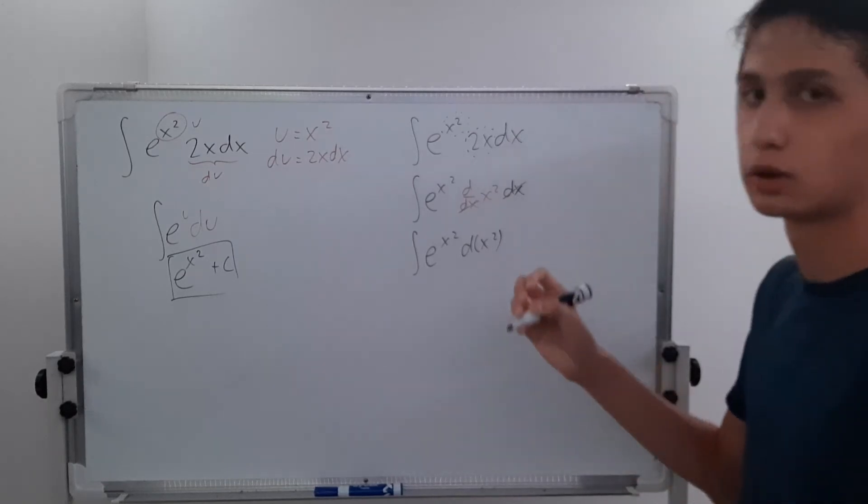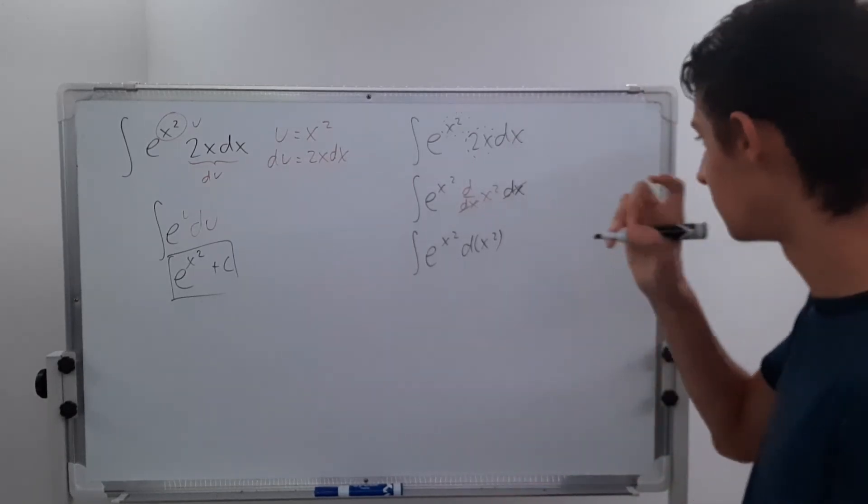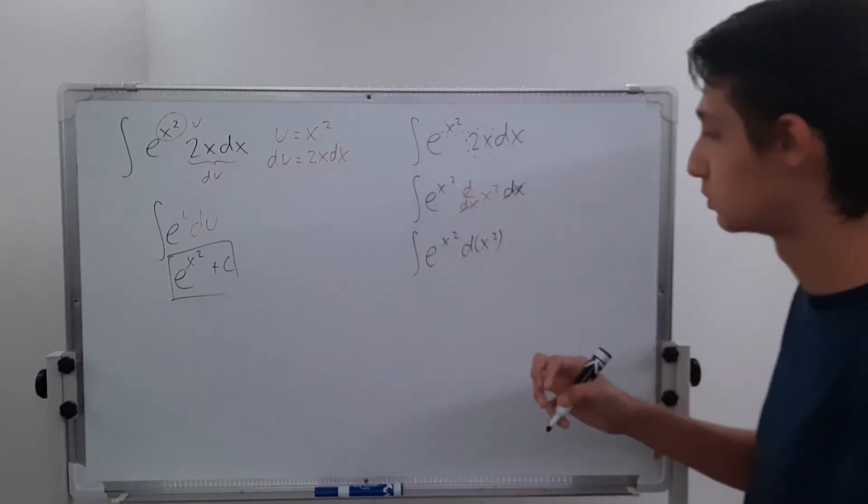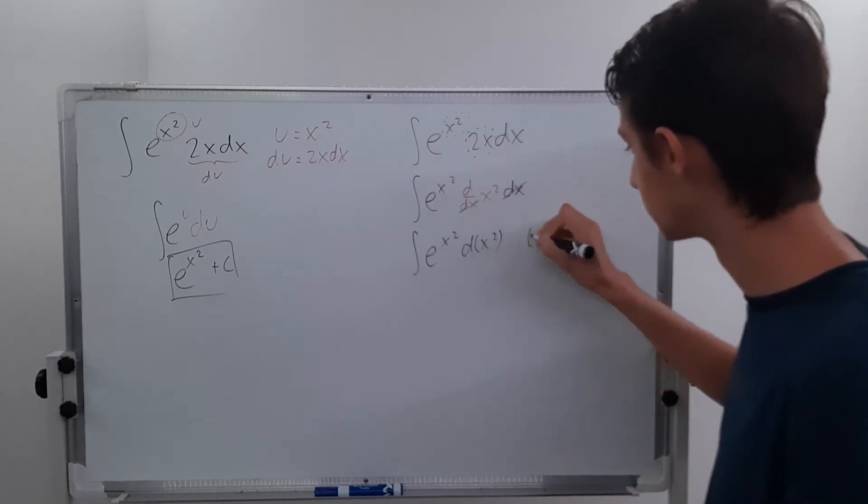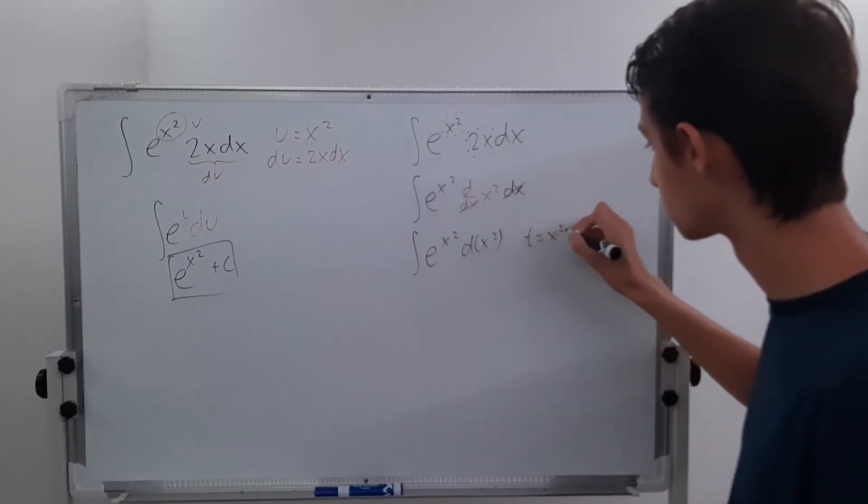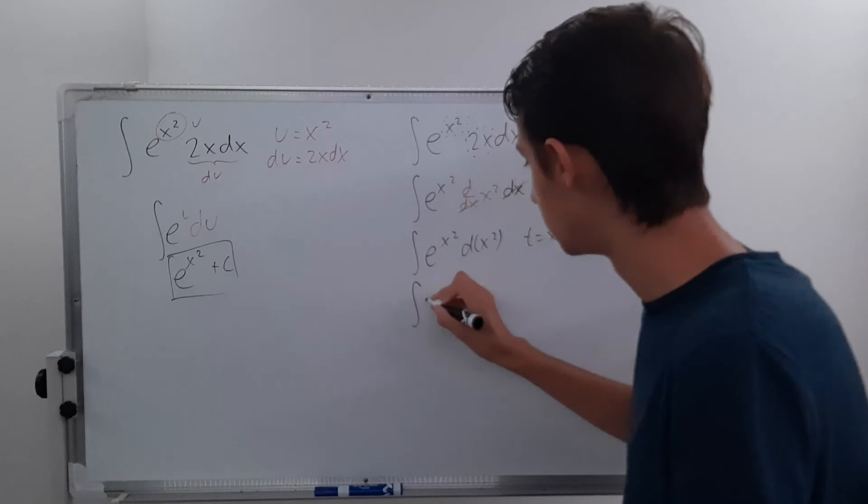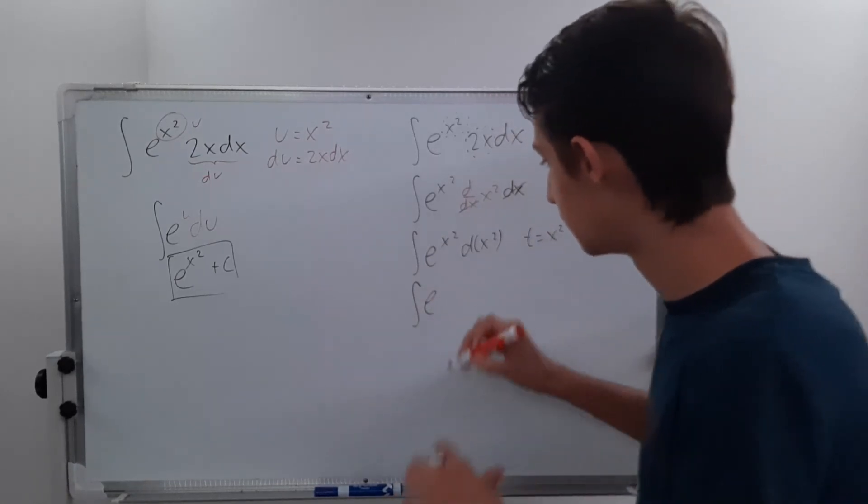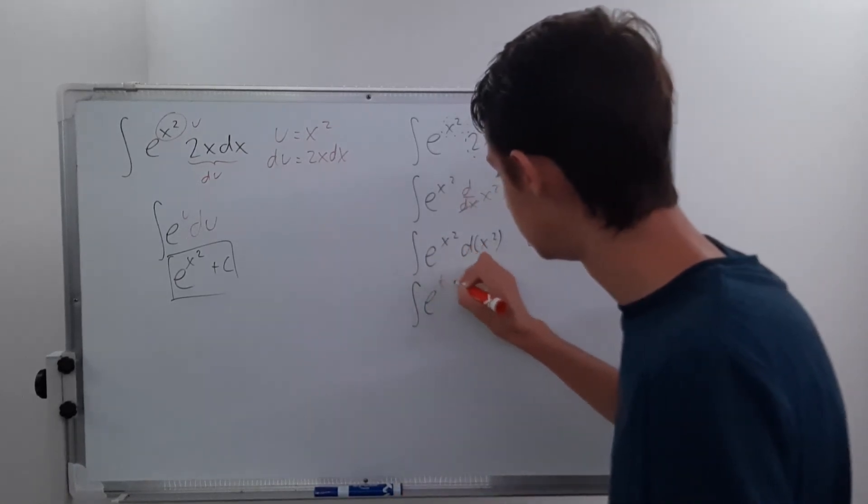But let's just do a quick little substitution, not the typical u substitution, but just to make this look better. Let's do t equals x squared. So now we have e to the t dt.